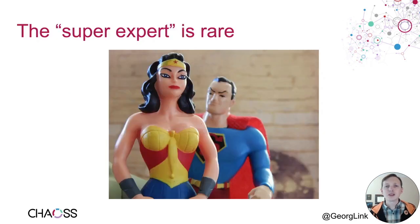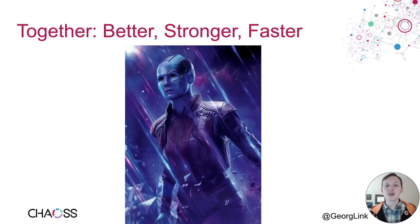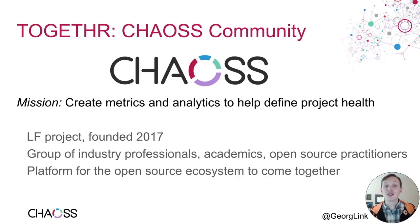There are some who can just look at a project and understand its project health — these super experts, however, are rare. So the proposition here is: together, let's be better, stronger, faster. I'll use this theme to guide the next set of slides. The CHAOSS Project was started in 2017 as a collaborative project at the Linux Foundation to create metrics and analytics to help define project health.